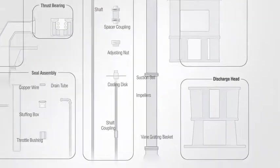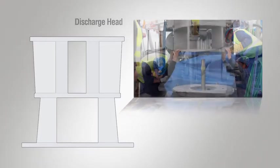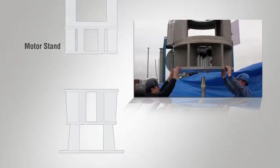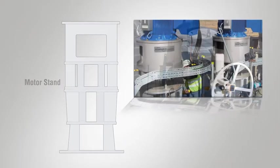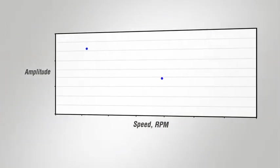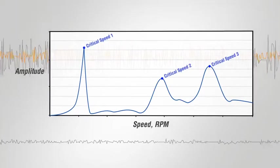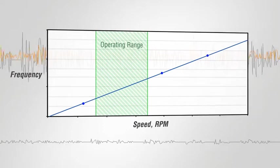The oversized discharge head of the FlowServe Molten Salt VTP is a substantial structure. When mated with the rigid motor stand, the mass and stiffness of the assembly ensure the pump's critical frequency is well outside the operating speed range. As a result, vibration levels are below ISO 13709 and API 610 levels.